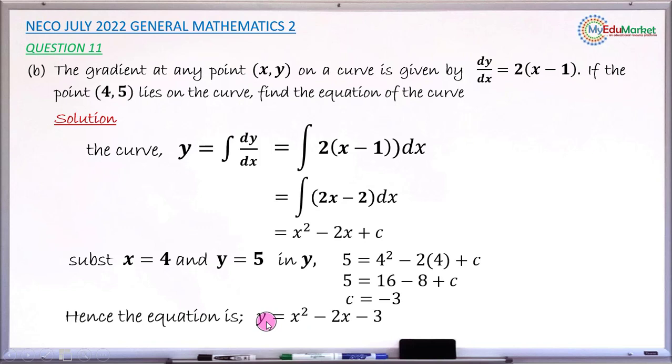So that exact curve is now going to be y equals x squared minus 2x minus 3. This is the curve that we asked you to find, that is, the equation of the curve.